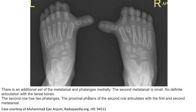This is an example where there is an additional set of metacarpal and phalanx. The second metacarpal is small with no definite articulation with the carpal bone. The second row has two phalanges, and the proximal phalanx of the second row articulates with the first and second metacarpal.